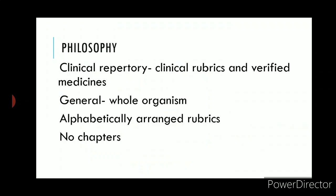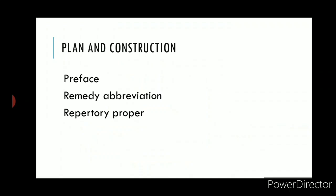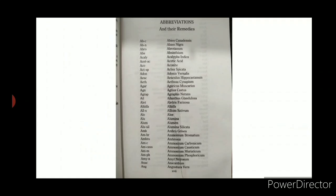In plan and construction, we can divide this repertory into three major parts. First, there is a preface section where you will find explanation regarding the philosophy and arrangement of rubrics by the author and publisher. Then there is a section of remedy abbreviations listing remedies and their abbreviations.